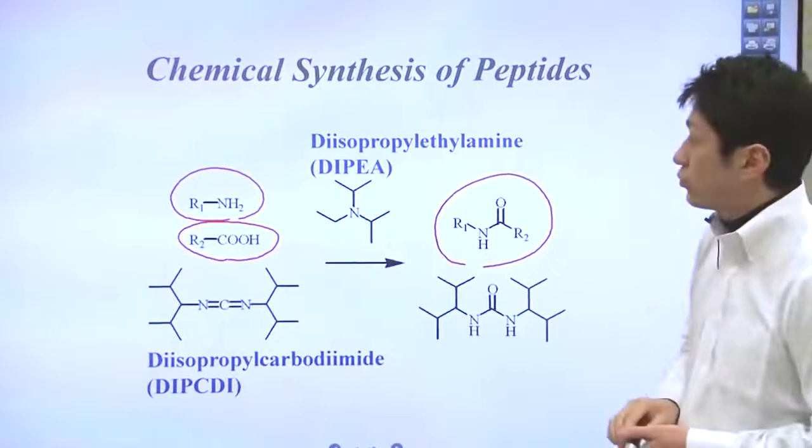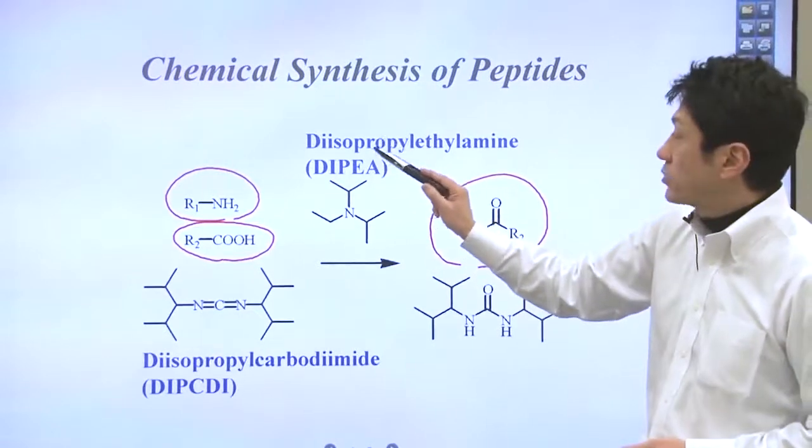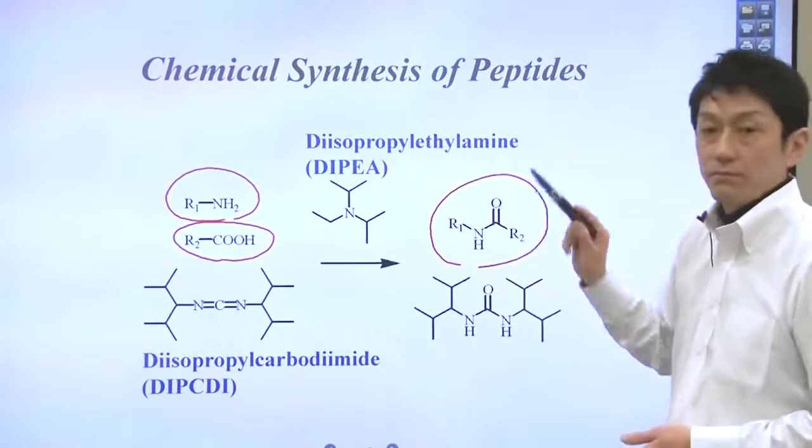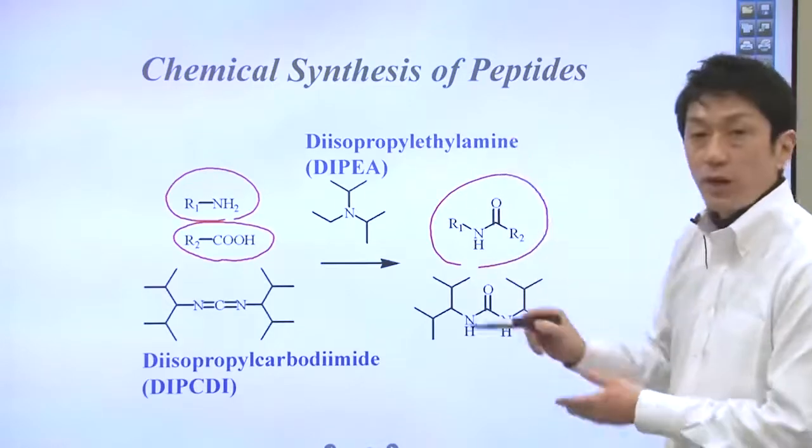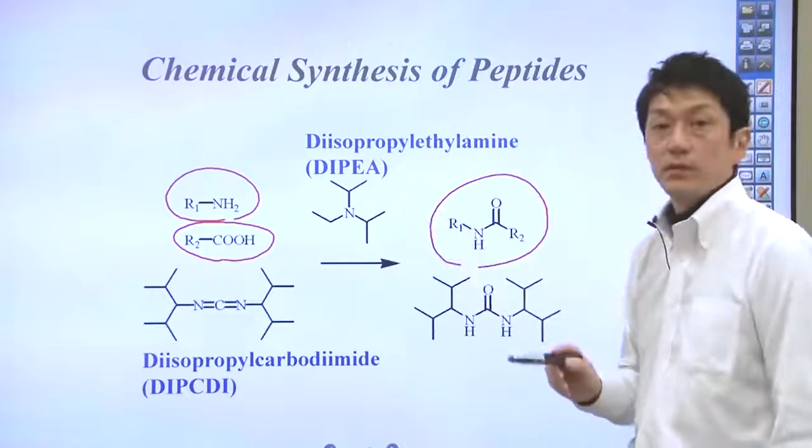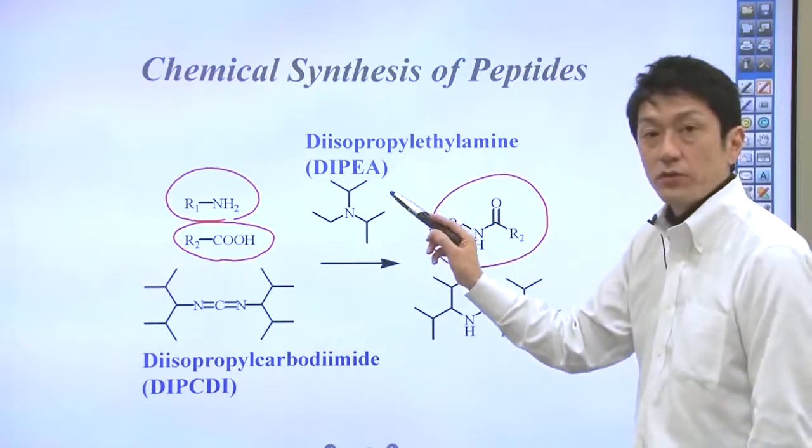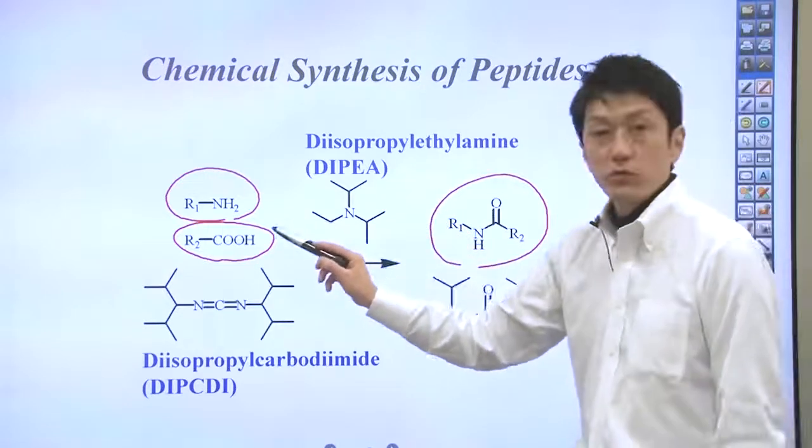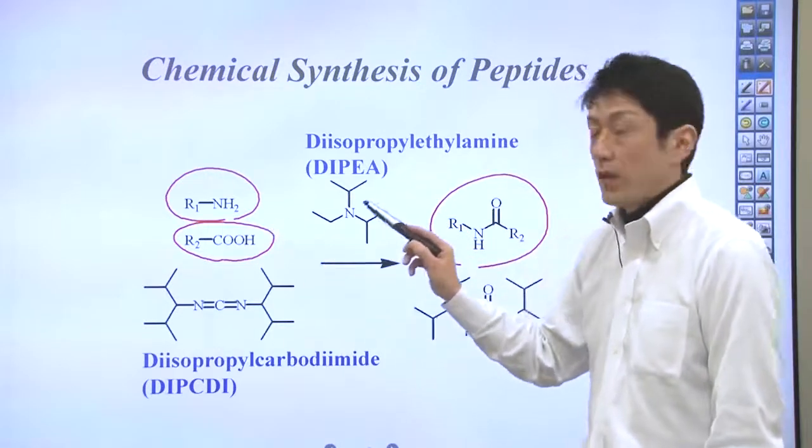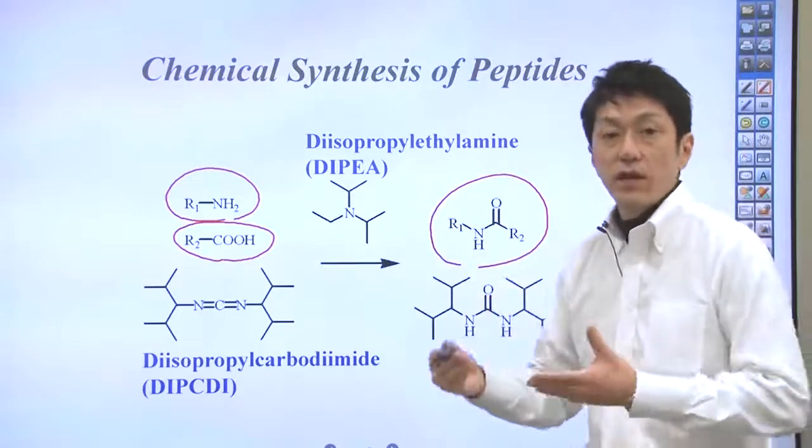A typical base would be DIPEA, diisopropyl ethylamine. This base is really bulky if you look at the structure. That's why it does not make an amide bond with the carboxyl group itself, but it is still a base to accelerate the reaction.